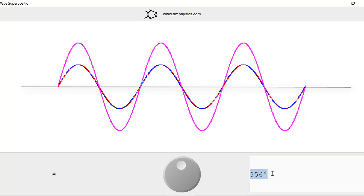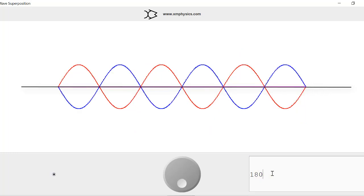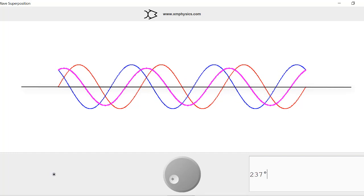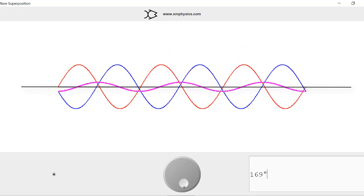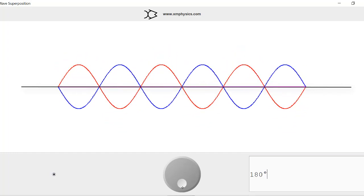Likewise for destructive interference. So the first time we get destructive interference is when they are off by half a cycle, so the phase difference is π radians. The next time we get complete destructive interference is when they are off by one and a half cycles, phase difference of 3π radians.